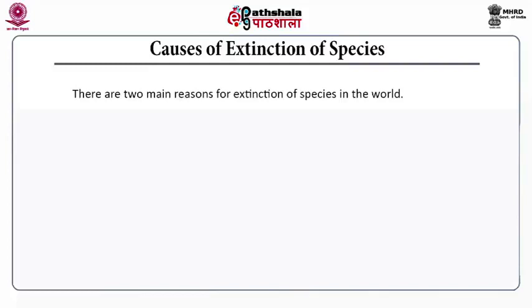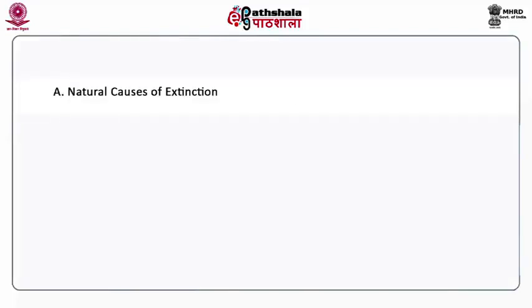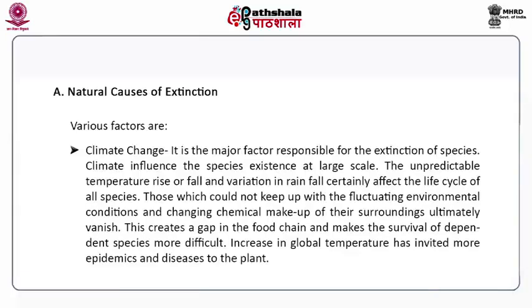Causes of extinction of species. There are two main causes: natural causes and anthropogenic causes. Natural causes of extinction include climate change, which is the major factor responsible for the extinction of species. Climate influences species existence at a large scale. The unpredictable temperature rise or sudden fall and variation in rainfall certainly affect the life cycle of all species. Those which cannot keep up with the fluctuating environmental conditions and changing chemical makeup of their surroundings vanish and ultimately die. This creates a gap in the food chain, making the survival of other species that are dependent on the extinct ones very difficult.